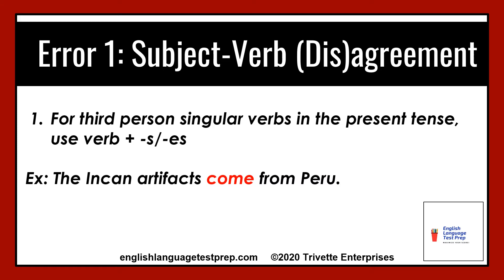Our first point comes from basic grammar. Number one, for third person singular verbs: in the present tense, use the verb plus the ending S or ES. For example, the Incan artifacts come from Peru. This is just the basic ending for the present tense verb in English.